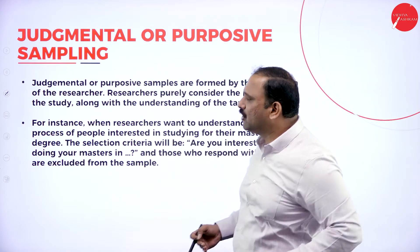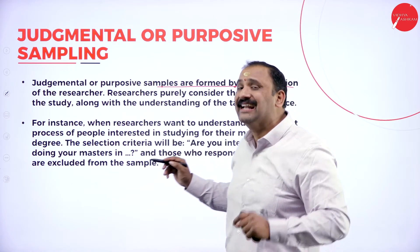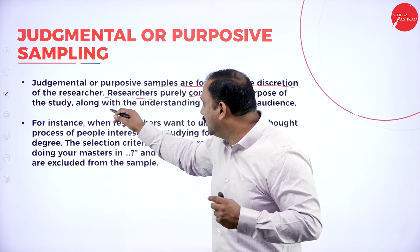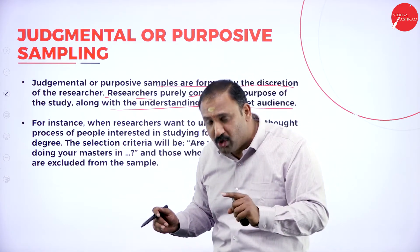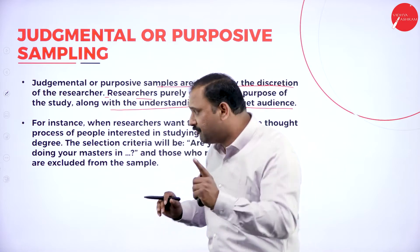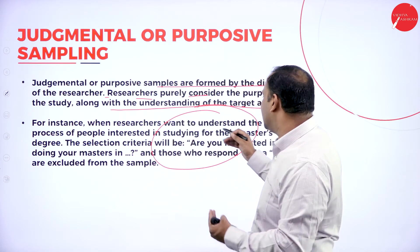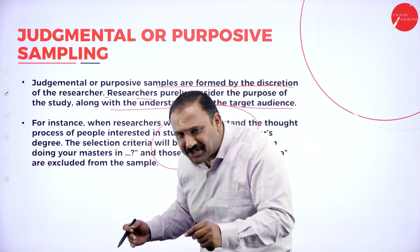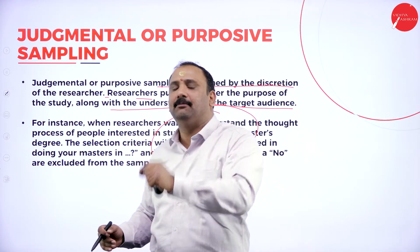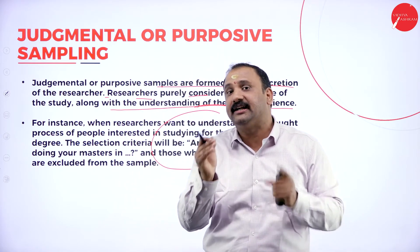Judgmental or purposive sampling is formed by the discretion of the researcher. Researchers purely consider the purpose of the study along with their understanding of the target audience — they know who their target audience is and what they are looking for. For instance, when researchers want to understand the thought process of people interested in studying for their masters, the questions are direct, targeting the specific audience to understand their objectives. Judgmental sampling includes all kinds of questions targeted towards a specific group.